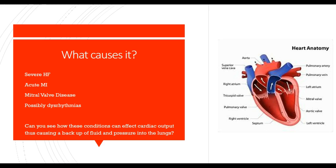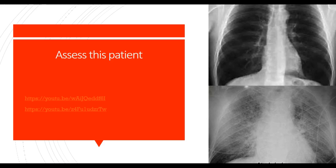Whenever cardiac output is compromised, there's going to be some backup into the pulmonary system, increasing pulmonary edema and pulmonary hypertension. Can you see how these conditions affect cardiac output, causing a backup of fluid and pressure into the lungs? A lot of these conditions are direct consequences of heart necrosis that leads to heart failure, making it an ill-efficient pump and compromising cardiac output.